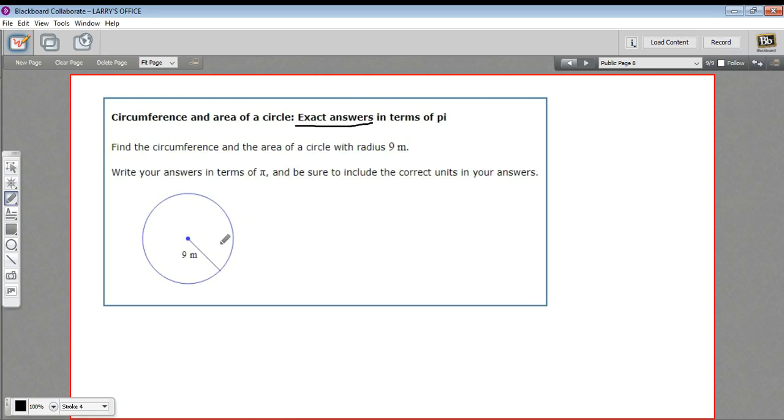Most of the time we use an approximation for pi, maybe 3.14 or a few more digits. The reason is that pi goes on forever. It's one of those irrational numbers where the decimal part never ends. So if you were trying to use some exact number for pi, you'd never get to the end of it.